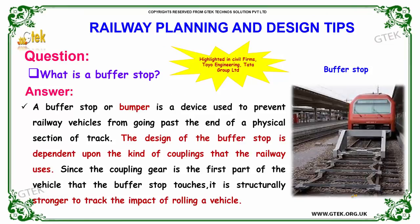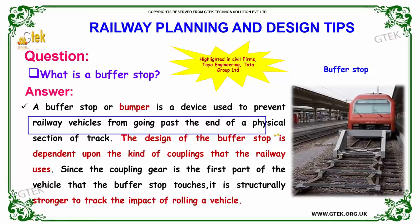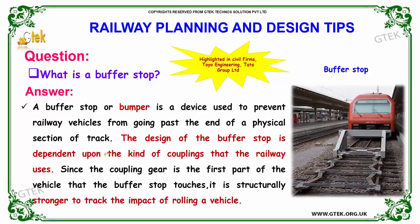The next question: what is a buffer stop? A buffer stop, or bumper, is a device used to prevent railway vehicles from going past the end of a physical section of track. The design of the buffer stop is dependent upon the kind of couplings that the railway uses, since the coupling is the first part of the vehicle that the buffer stop touches, making it structurally stronger to absorb the impact.